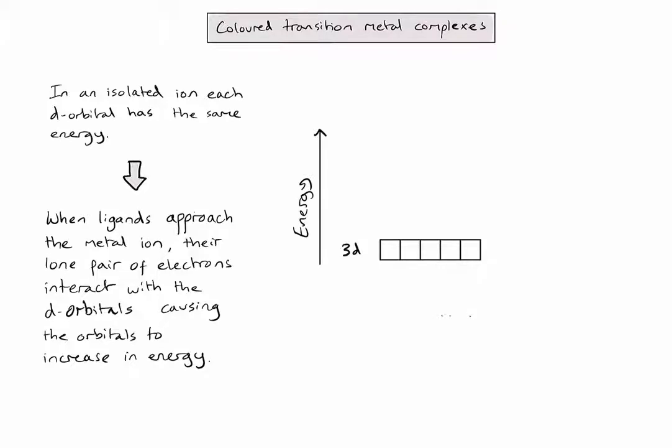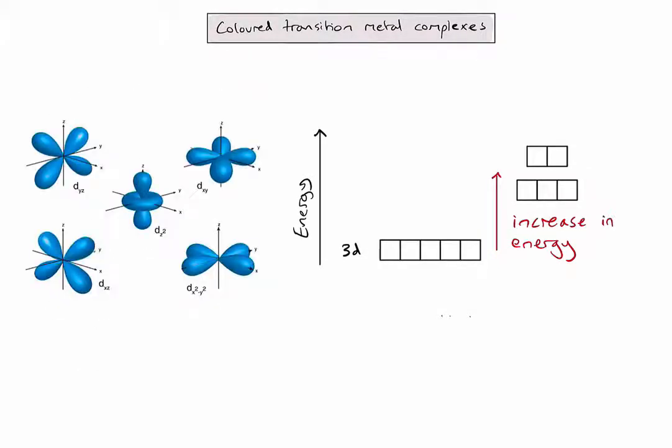So let's redraw the 3d-orbitals after they've increased in energy. You'll notice here in the diagram that I've actually no longer drawn all of the d-orbitals at the same energy. Two are slightly higher and three are slightly lower. Let's have a look at the shape of our d-orbitals again to try and explain why this might happen. If we take the example of six ligands approaching my central ion along the x, y and z axis, you'll notice that two of the d-orbitals are actually oriented along the axis.